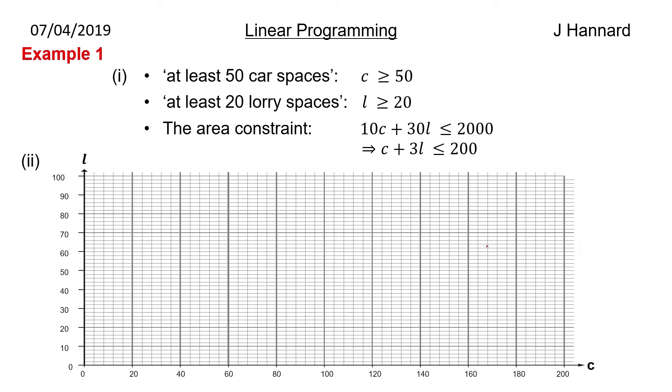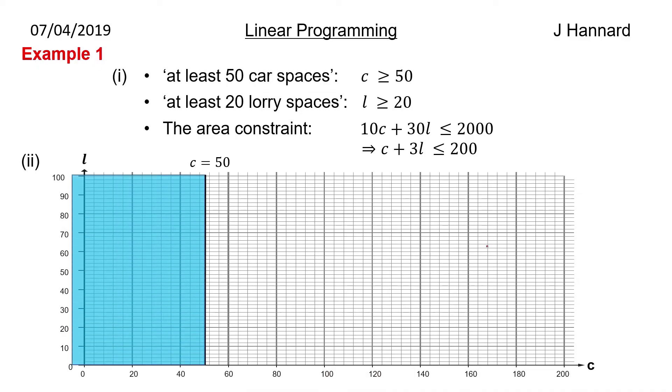So we now want to draw everything out. So this is the graph obviously. So from 0 to 100 on the l-axis and 0 to 200 on the c-axis. So we're going to draw it in now. So the first constraint C is greater than or equal to 50. So we draw a vertical line through 50 on the c-axis. And we ask ourselves, well we want to be greater than 50. So we shade the opposite. So we shade that side.